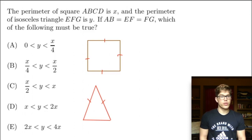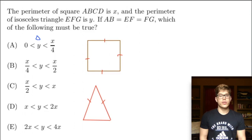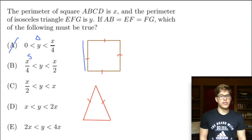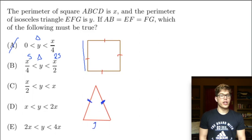Let's look at our answer choices. Answer A says 0 is less than Y, which is less than X over 4. Y is the perimeter of our triangle, and X over 4 is the perimeter of our square divided by 4 — just one single side length. That's not true; the perimeter of our triangle is definitely greater than a single side length. Answer B says a single side length is less than the perimeter of our triangle, which is less than two side lengths. That's also not true, because we have two of our square side lengths as sides of the isosceles triangle, plus a third side, which makes it longer.